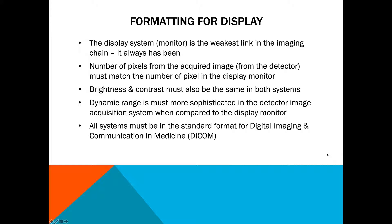When formatting for display, the computer is doing everything. What you need to know is that the monitor is the weakest link in the imaging chain — it has always been the weakest link, while our detectors are very sophisticated acquisition components. The number of pixels from the acquired image must match the number of pixels in the display monitor. The brightness and contrast must also be the same in both systems, and the dynamic range must be more sophisticated in the detector image so that you can manipulate the windowing and leveling. All of this is happening behind the scenes as a pre-processing operation.